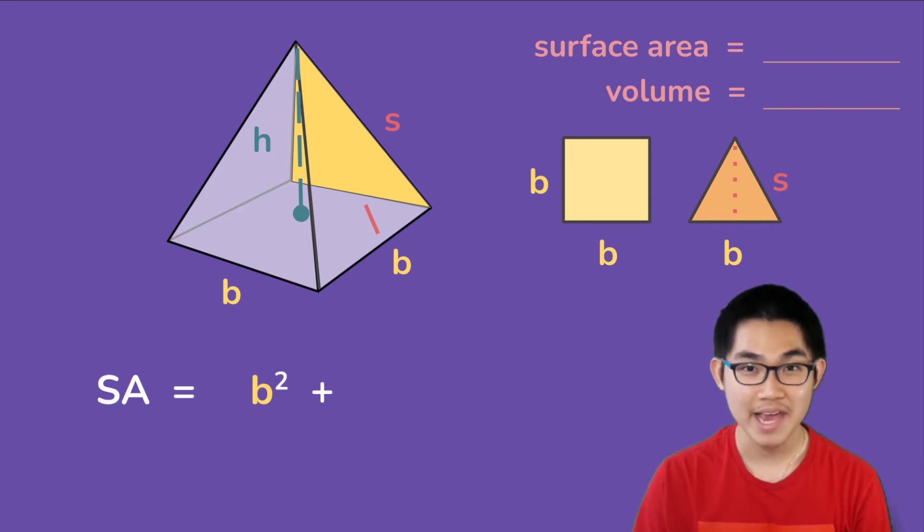Now the area of one triangle is one half times the base times the height of the triangle or the slant height which is s. Since there are four triangles in total we need to multiply by four, so four times one over two is two. And this is the surface area formula for the pyramid which is b squared plus two times b times s.